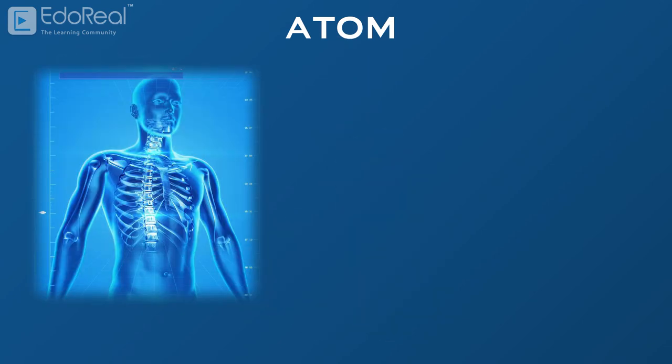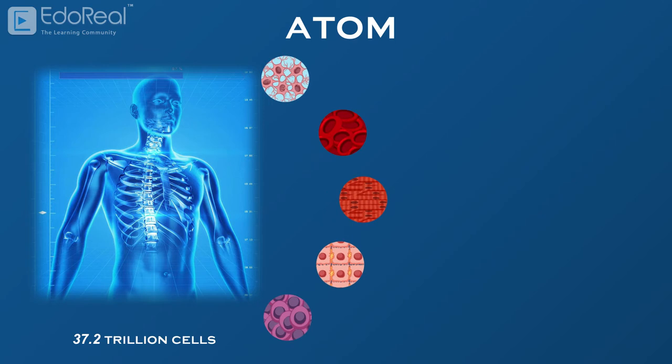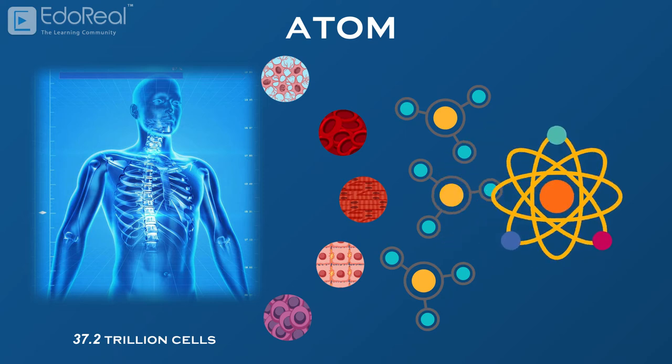For example, if you consider a human body, it is made up of 37.2 trillion cells. The cells in turn are made up of molecules, and the molecules in turn are made up of atoms.